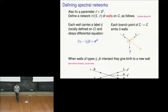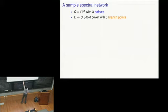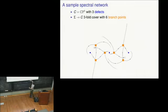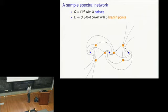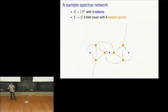Here's an example where I took the curve to be CP^1, put three defects — three singularities of the covering — and have a threefold covering over CP^1 with six branch points. You start from the branch points, shoot out these trajectories, and evolve them for infinite time. You see that in practice this leads to some complicated-looking structure, but on the other hand you can imagine it's actually a kind of combinatorial object — you can keep track of where everything intersects. So it's just some combinatorial picture drawn on the surface by this procedure.